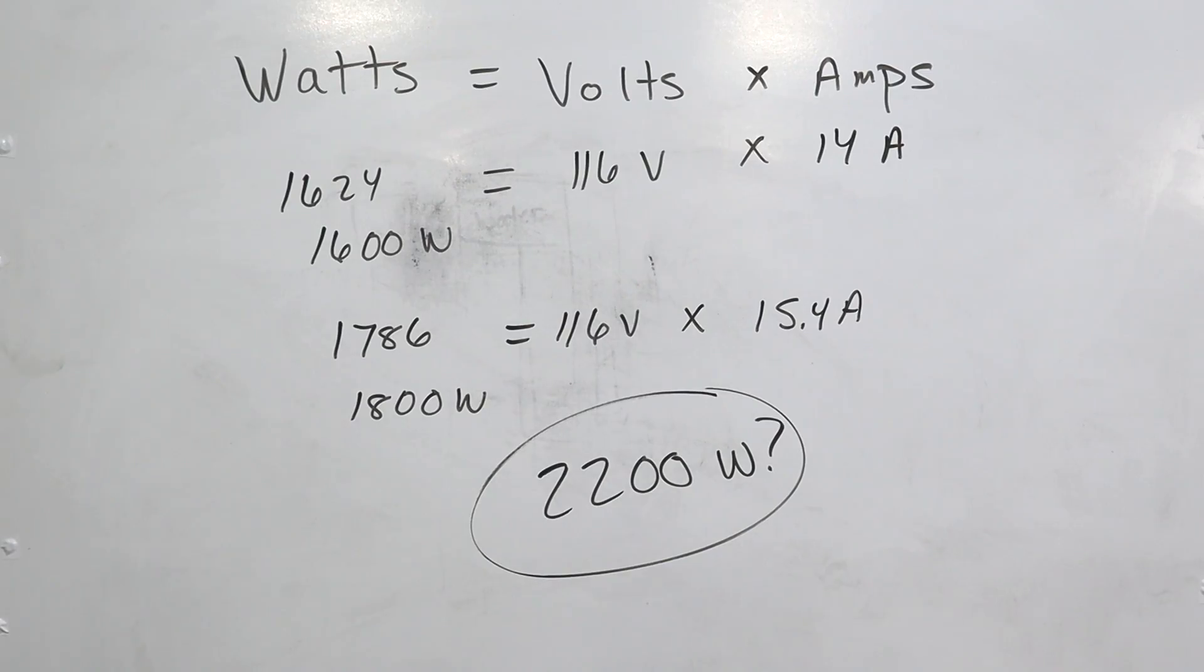So Vivore claimed that the jackhammer is actually 2,200 watts, and so are they just a bunch of liars, or what's going on? What's actually going on is that their jackhammer is designed for 2,200 watts. That means between the voltage going into the unit and the amperage flowing through the unit should be basically designed for 2,200 watts. Obviously, in the real world, things aren't 100% efficient, and so that's where you get some of the loss.